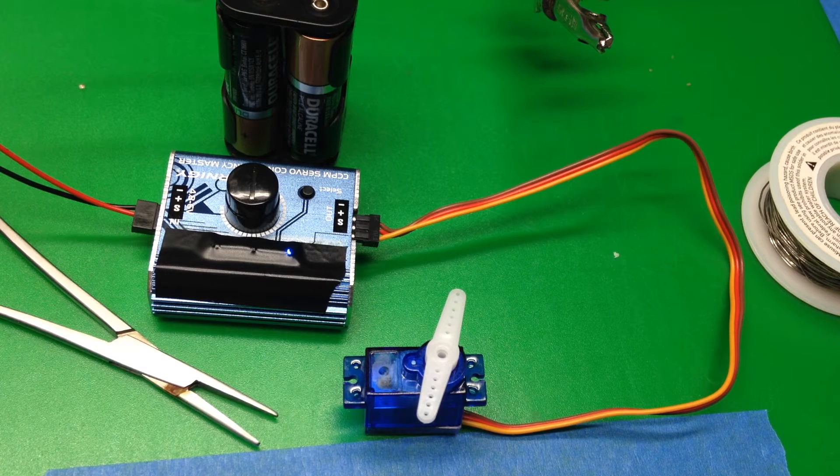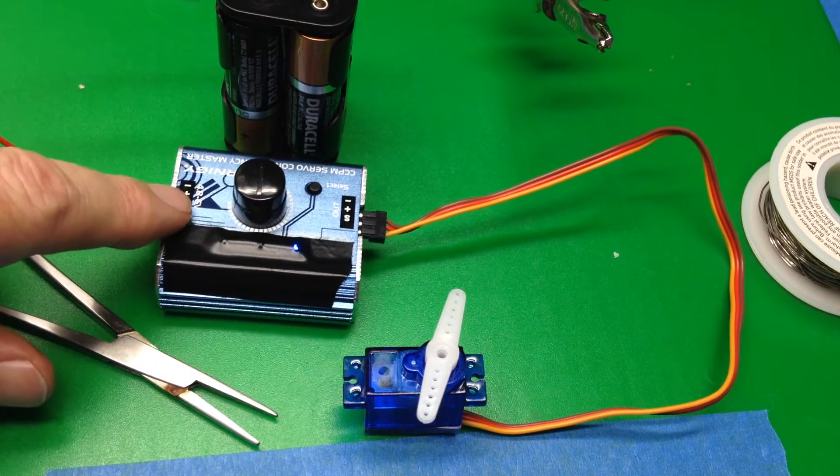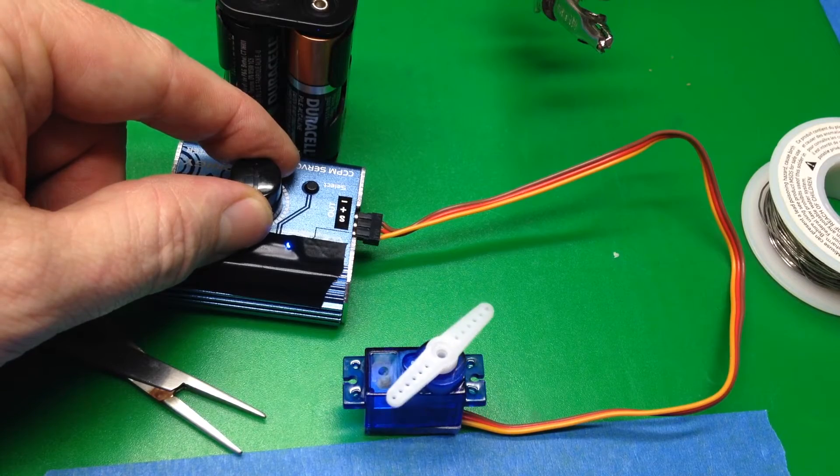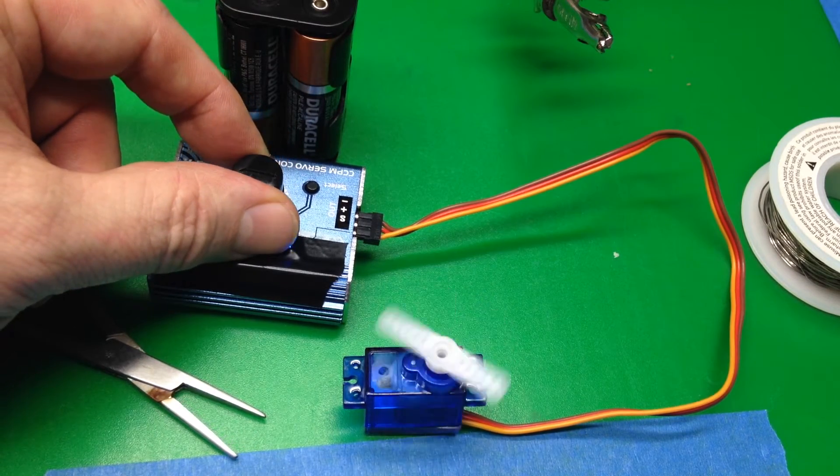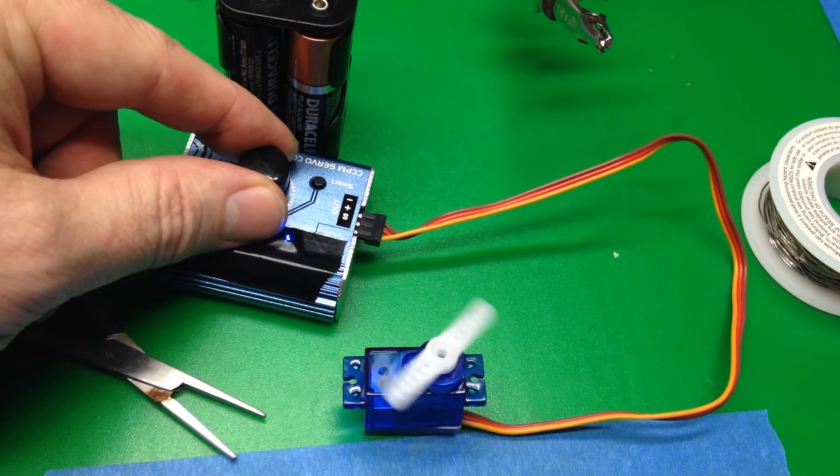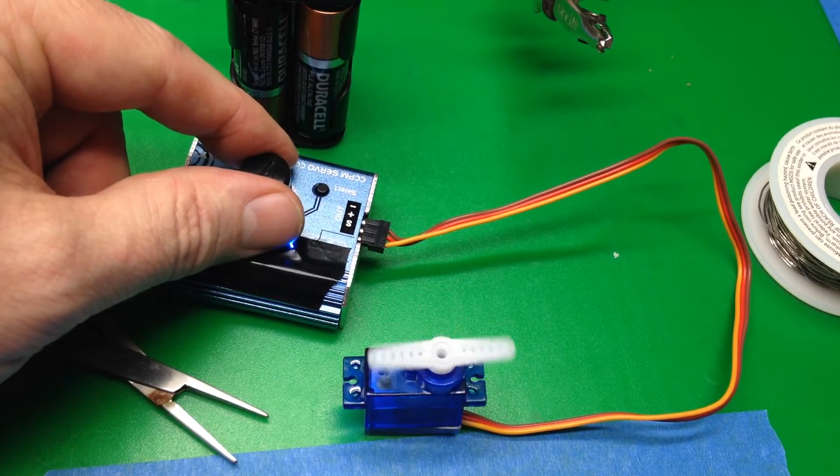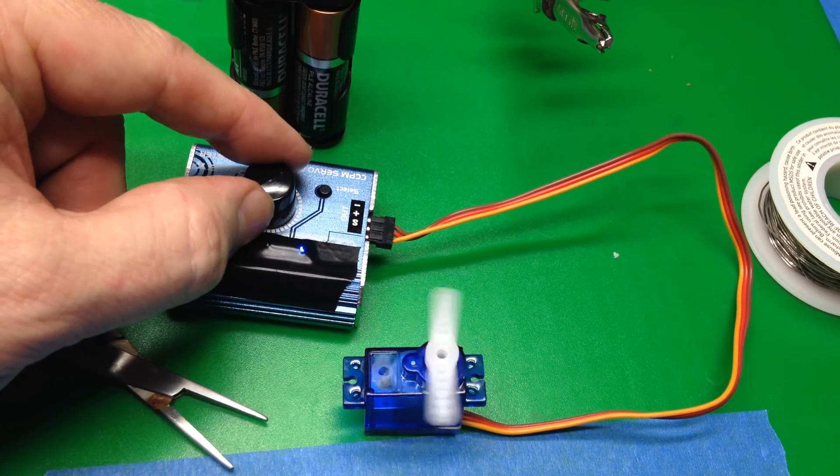Okay, here we've got the servo modified for continuous motion and it's centered right now on the servo tester. If we put it a little bit in one direction it will turn slowly, and if we turn it more it speeds up. If we go in the other direction we get back to the center and then we're reversing, also with variable speed.